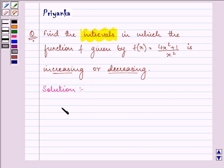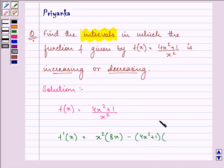Here we are given the function f(x) = (4x² + 1)/x². Let us find its first derivative. Using the quotient rule: x² times 8x (derivative of numerator) minus numerator times derivative of the denominator, all over the denominator squared.